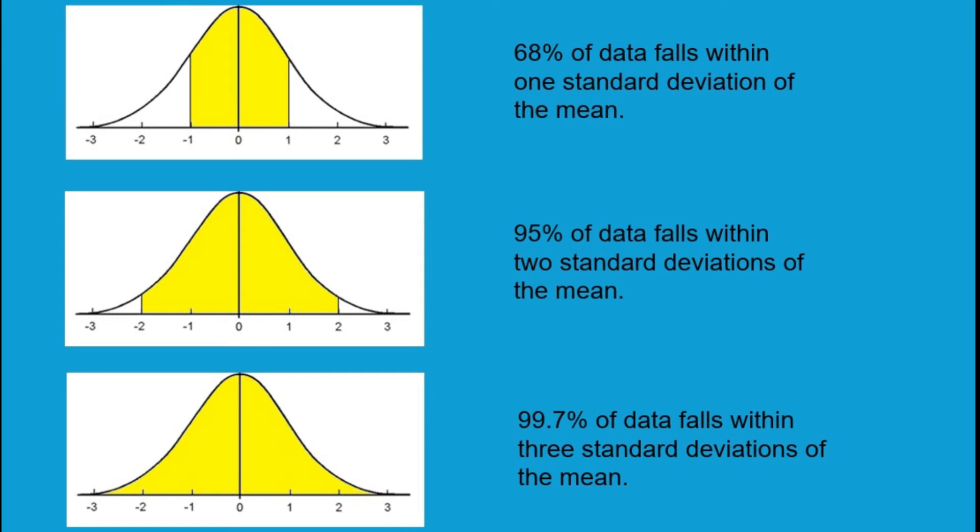Now the empirical rule tells us what percentage of the data falls within a certain number of standard deviations from the mean. Here's our mean right here. This is our average. The empirical rule tells us three things.